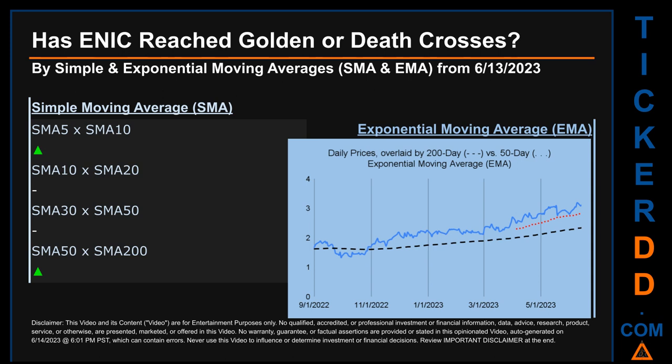EMA calculates moving average by giving more weighting to recent prices. Look at the generated graph: the 50-day EMA line is in red and the 200-day EMA line is in black. If no crossing can be seen, then no signal could be had. The blue line is daily end-of-day prices. For simple moving average, comparing 50 to 200 days, we found a bullish golden cross signal since the 50-day SMA crossed above the 200-day. We also looked across the 5-to-10, 10-to-20, and 30-to-50 day ranges. We found a golden cross signal for the 5-to-10, but could not find neither golden cross nor death cross for the 10-to-20 or 30-to-50.